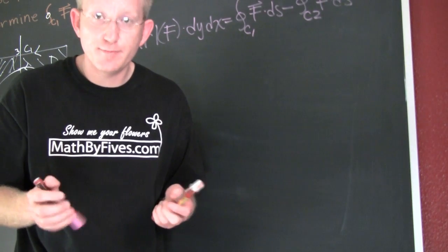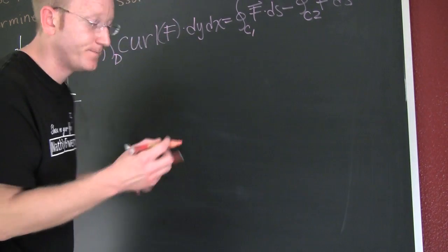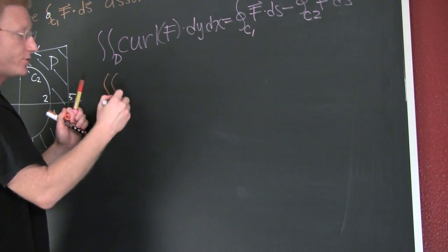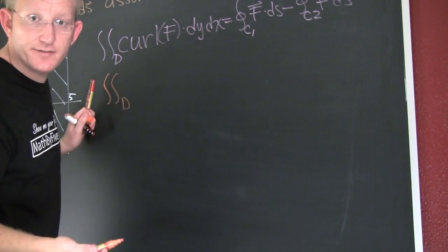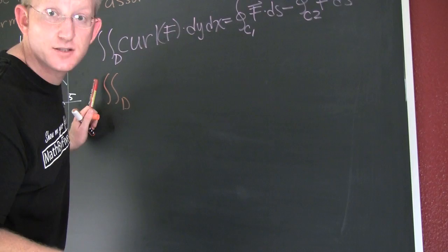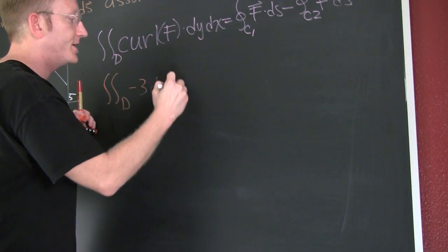Well, we know a couple of these pieces, and if we keep on keeping on, we can find them. This is the double integral over D. Now they gave it to us that the curl was minus 3. So this is minus 3 DYDX.